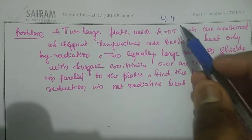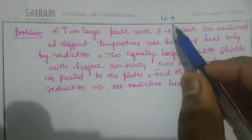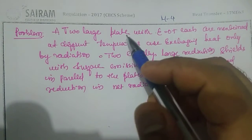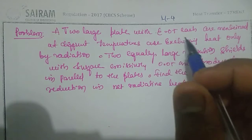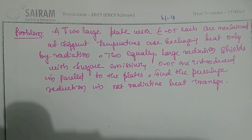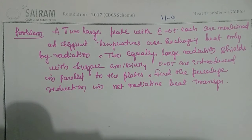Hello friends, we are going to discuss a problem on thermal radiation, module number 4. Two large parallel plates with emissivity of 0.5 each are maintained at different temperatures and are exchanging heat only by radiation. Two equally large radiation shields with surface emissivity of 0.05 are introduced parallel to the plates. Find the percentage reduction in net radiative heat transfer.